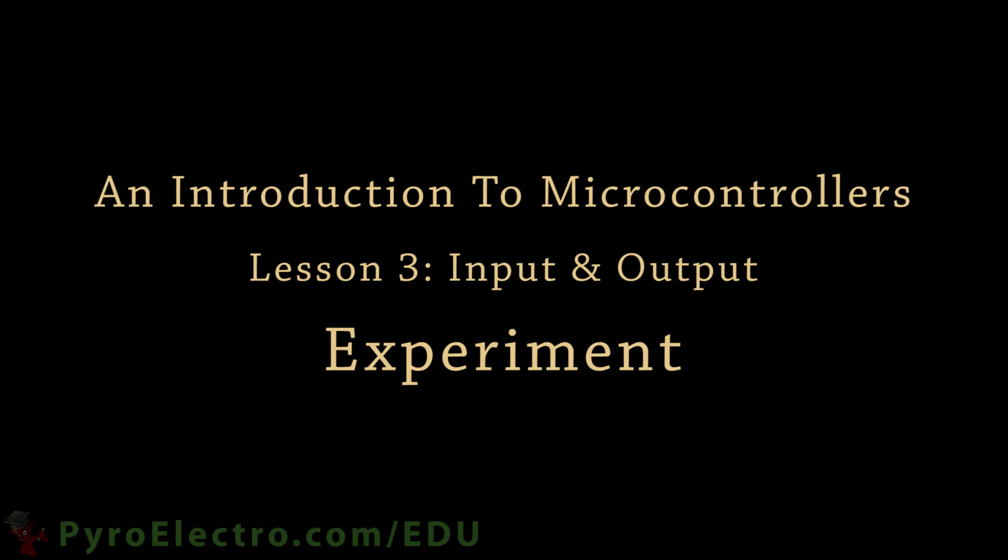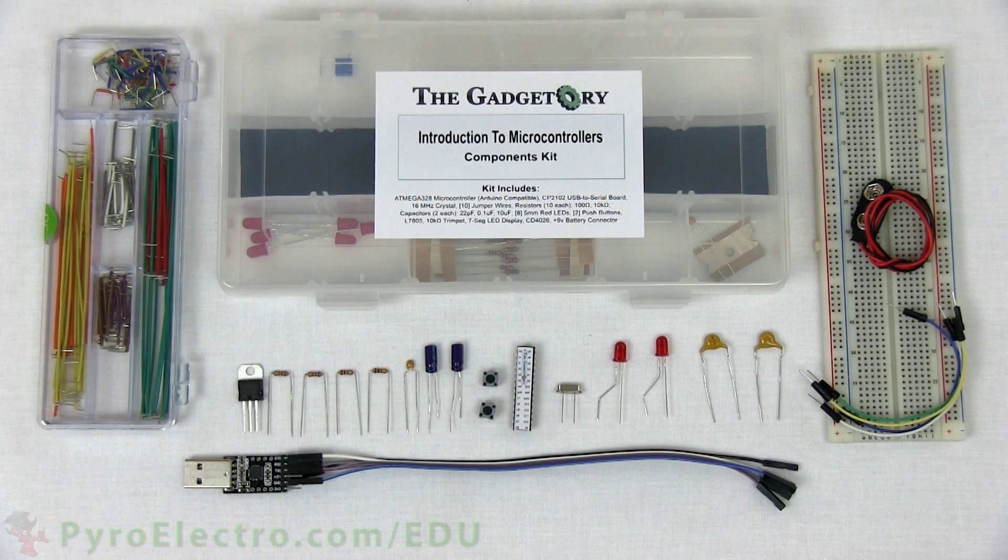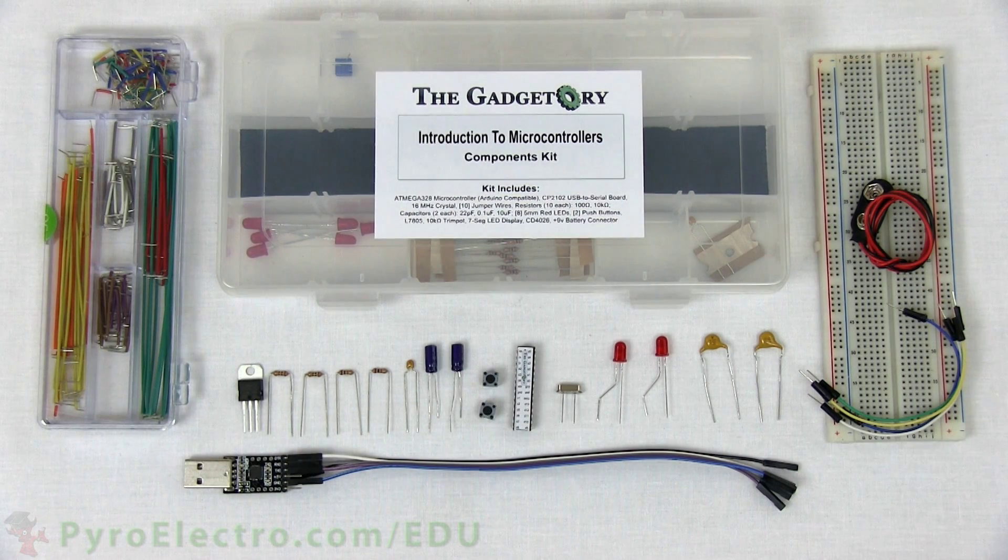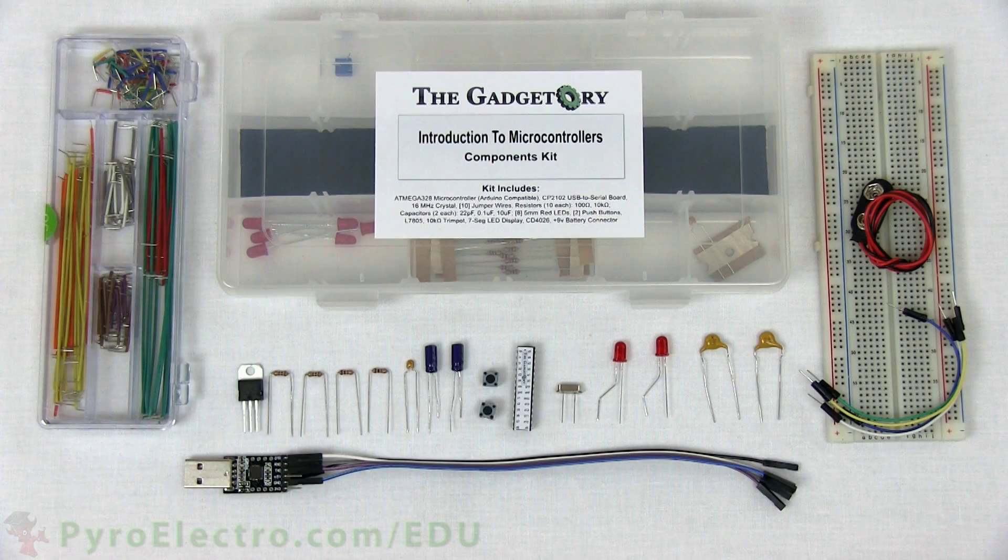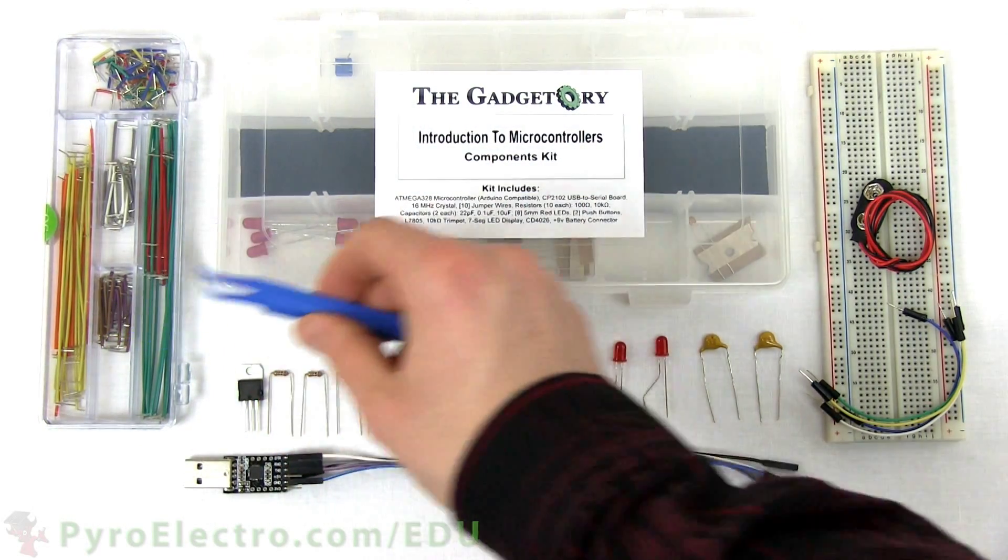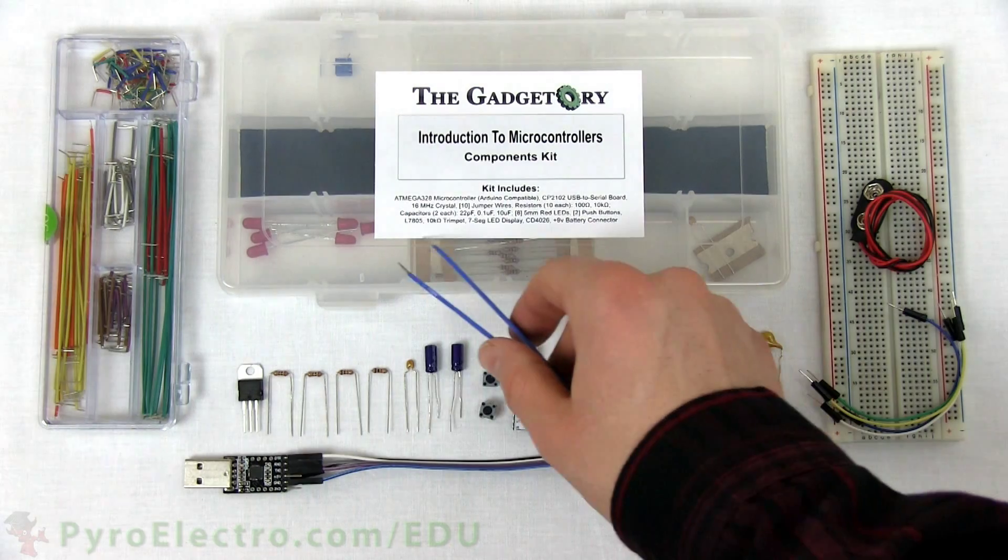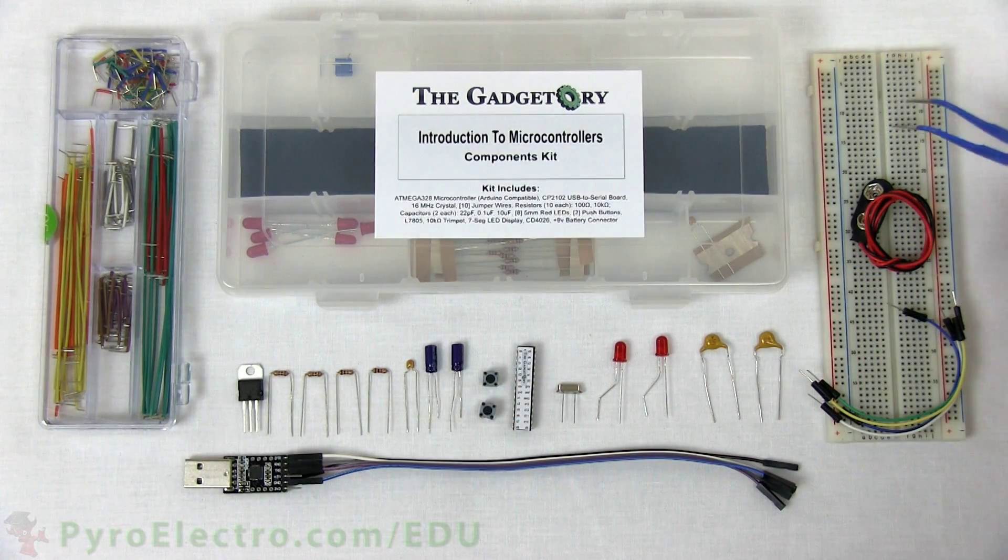We just saw the schematic that we're about to build, but let's go through the parts one by one just to make sure we're all on the same page. The parts we'll need to build the hardware side of this experiment are a jumper wire kit, the parts kit, and a breadboard.